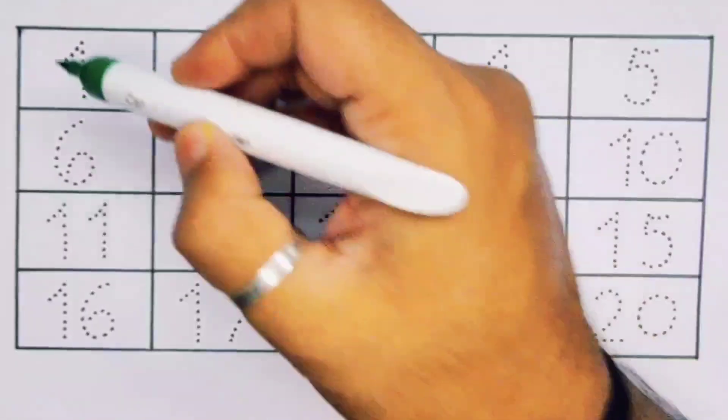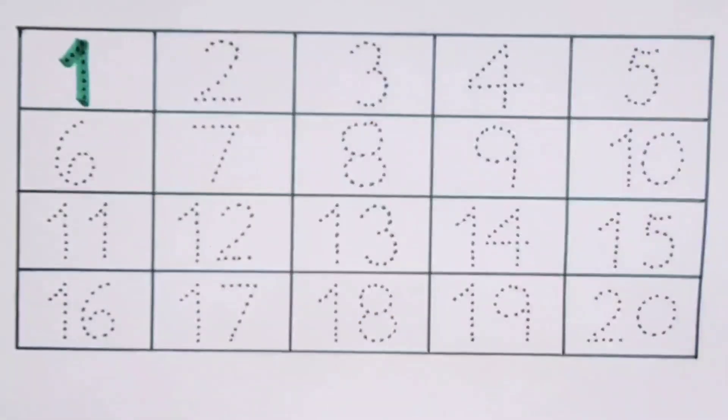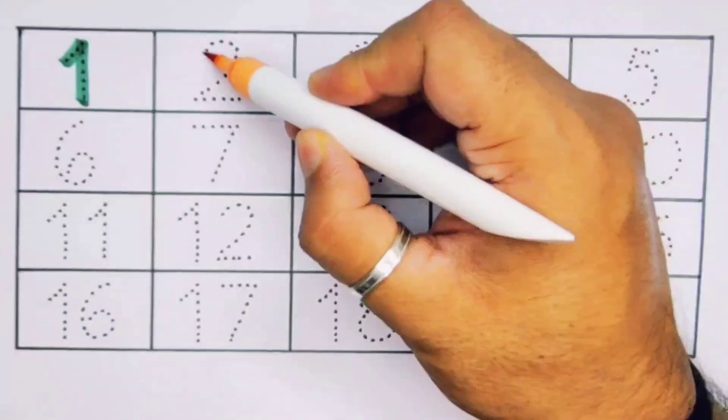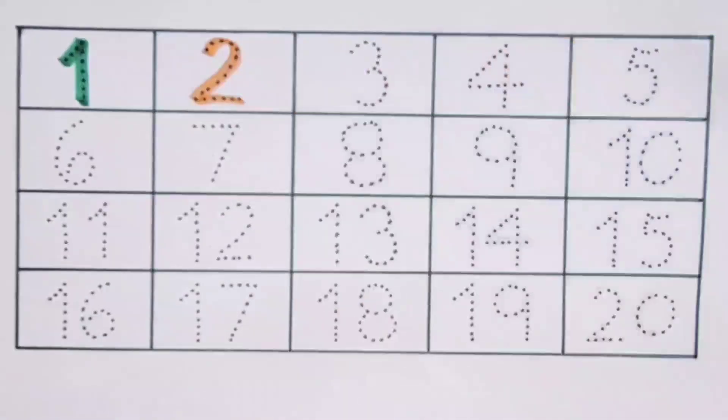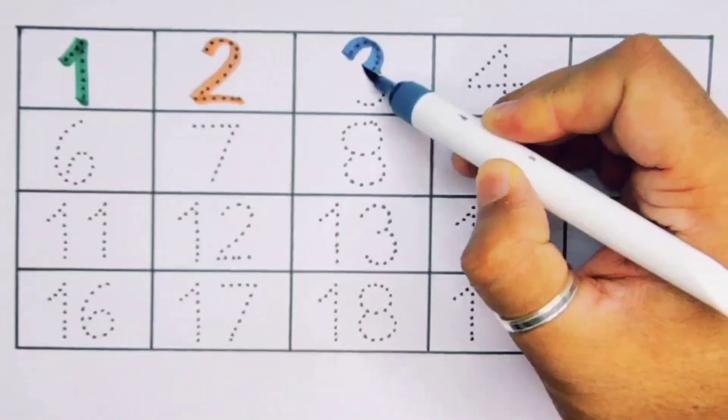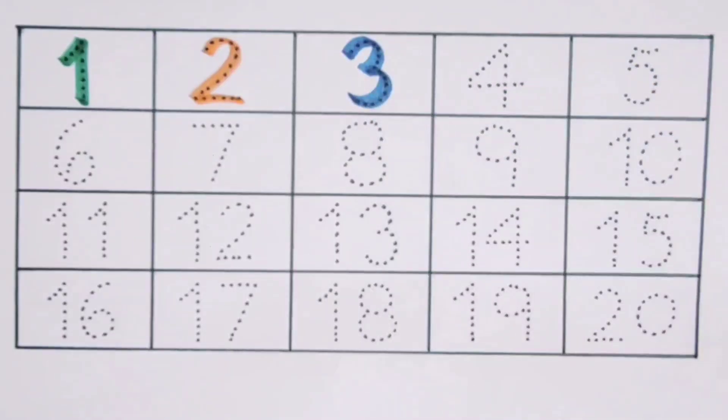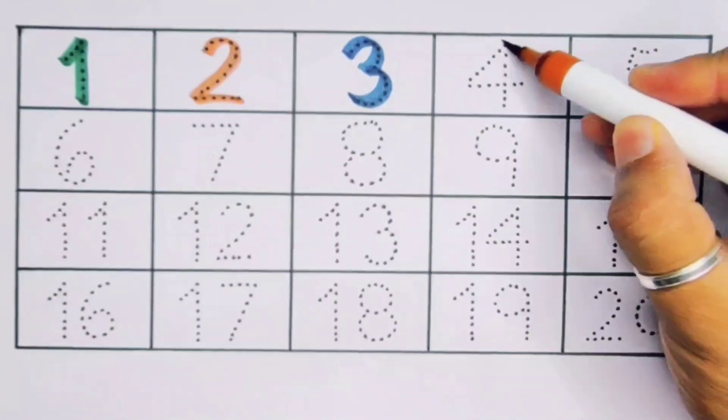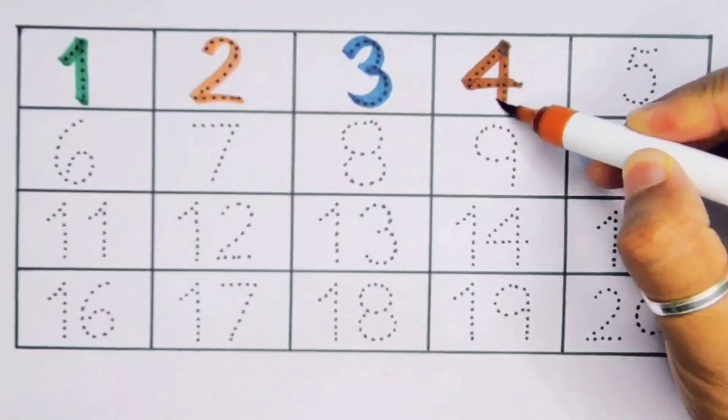One, number 1. Next kids, it's 2, number 2. Next, 3, number 3. Next, 4, number 4.